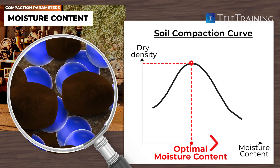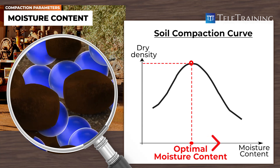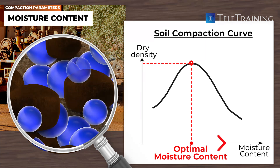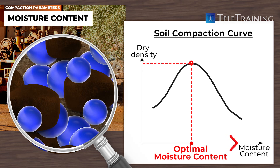After this point, water starts to replace soil particles and take up the space. And since the density of water is much less than the density of soil solids, the overall soil density starts to decrease.